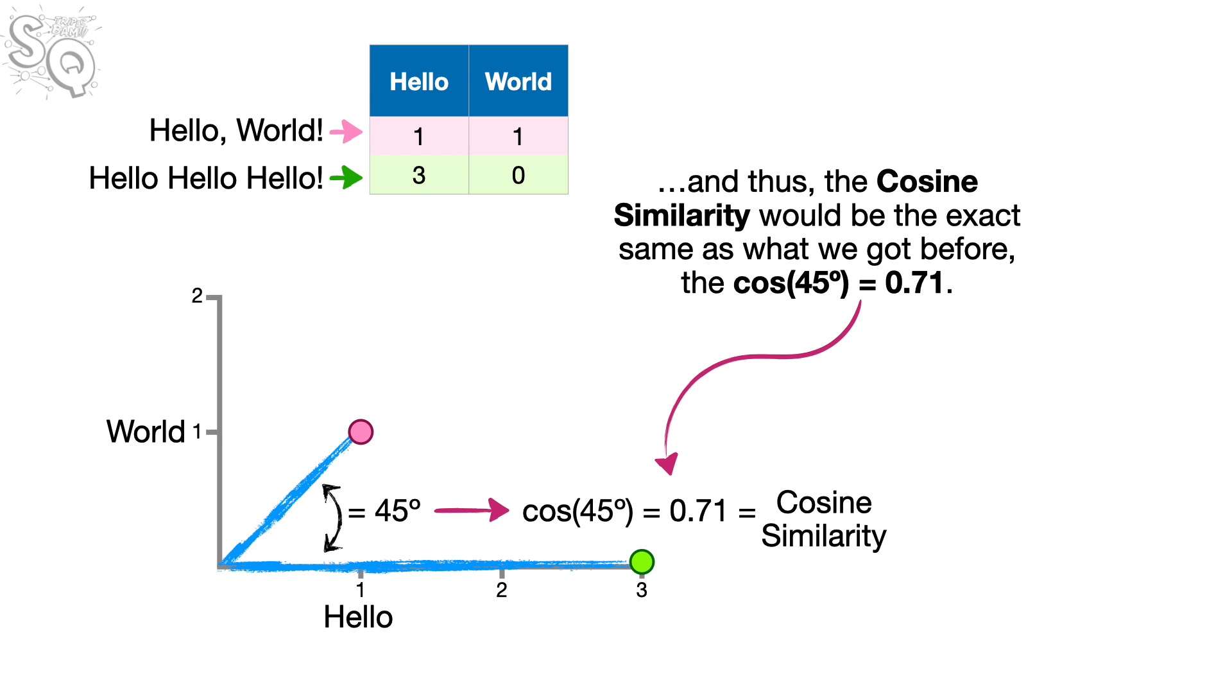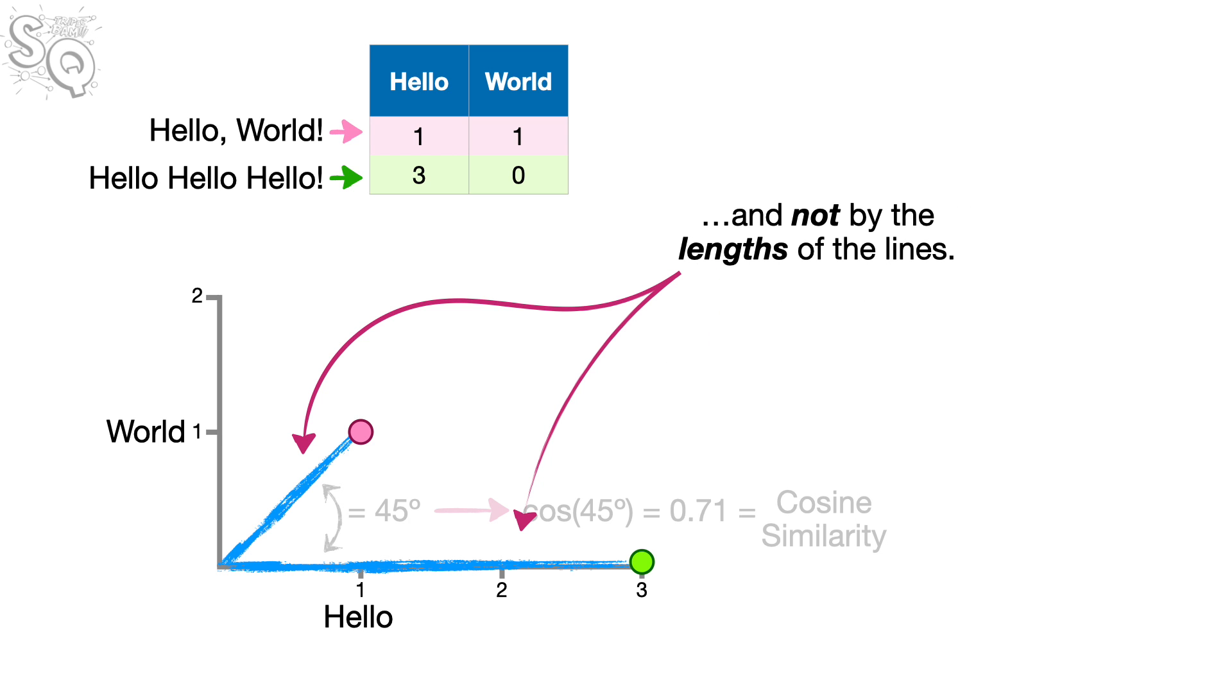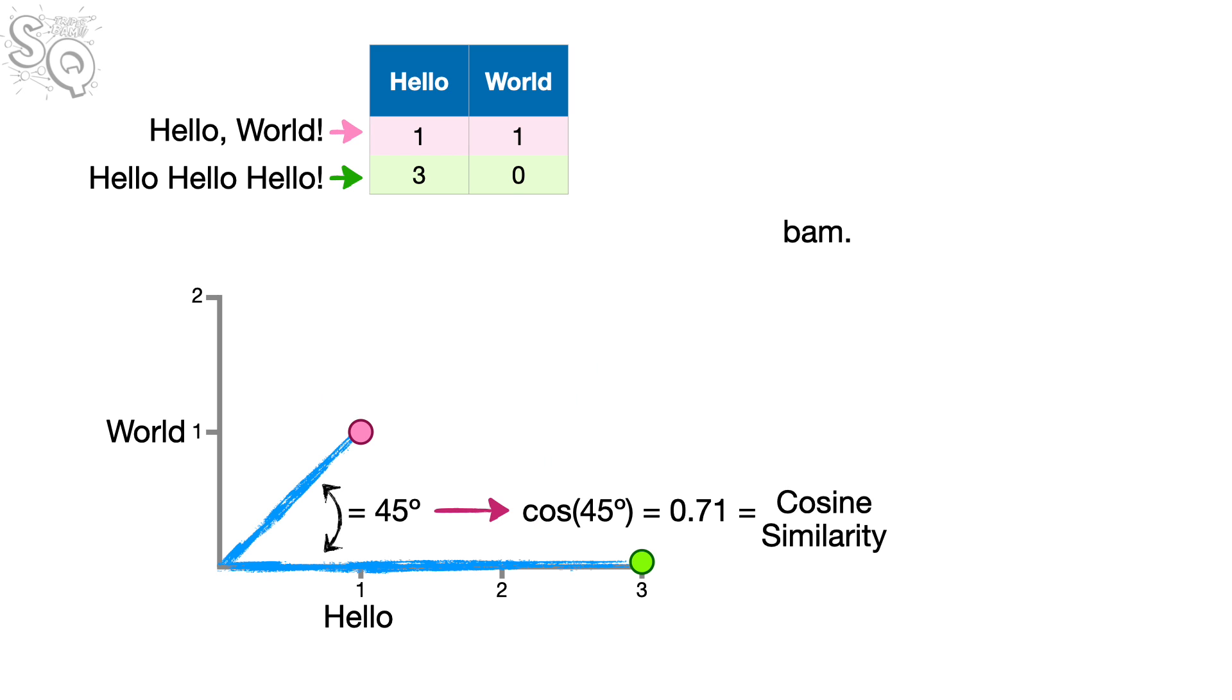And thus, the cosine similarity would be the exact same as what we got before, the cosine of 45 degrees equals 0.71. In other words, the cosine similarity is determined entirely by the angle between the lines, and not by the lengths of the lines. Bam! Bam!